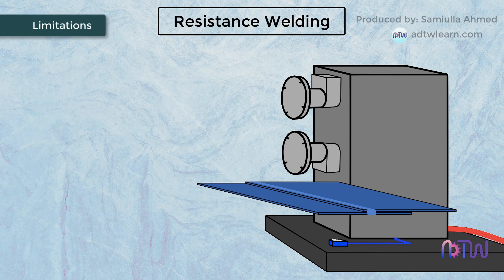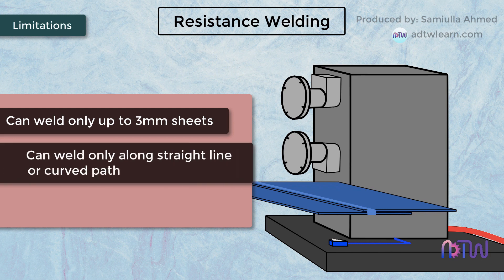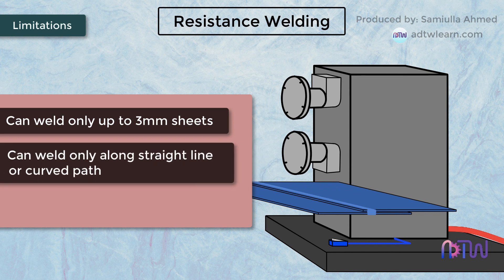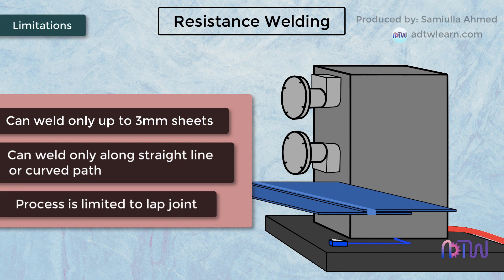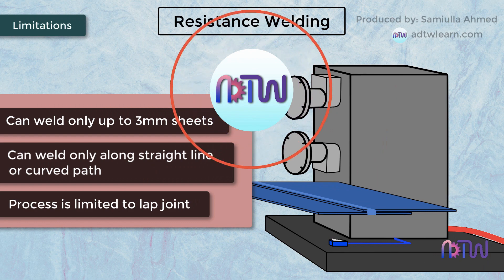Limitations of seam welding: The welding process is suitable for thin sheets only, up to a thickness of 3 millimeters. Since the electrodes are in the form of rollers, they can weld only along a straight line or well-curved path. The process is limited to lap joints.